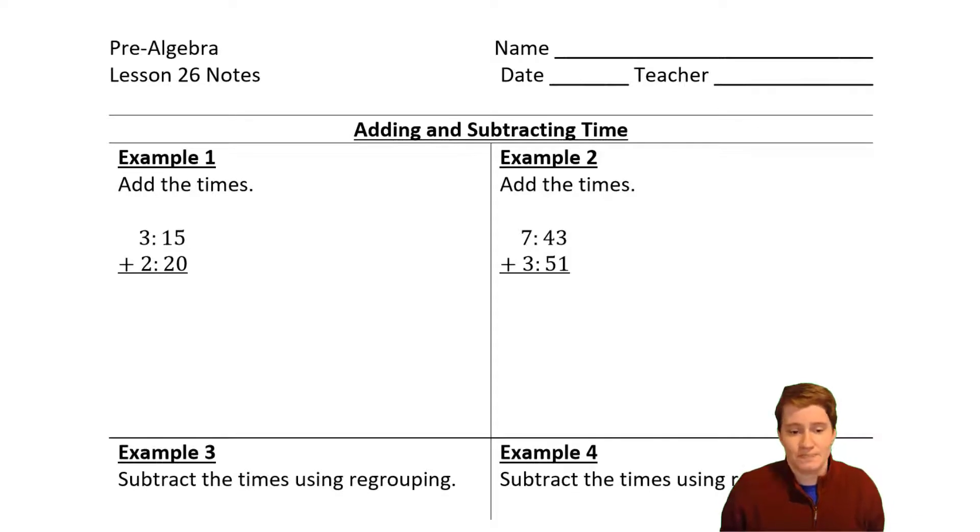But inside of this, we also have this addition problem. What is 15 plus 20? So that I think is where the trickiness comes from is this idea of regrouping and how it's supposed to work. So what I do here is 15 plus 20, which we could even go five plus zero and then one plus two, that gives us 35. And then we do three plus two and get five. So this answer is five hours and 35 minutes.